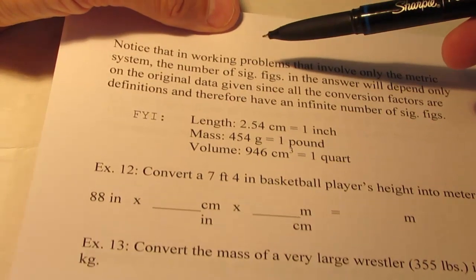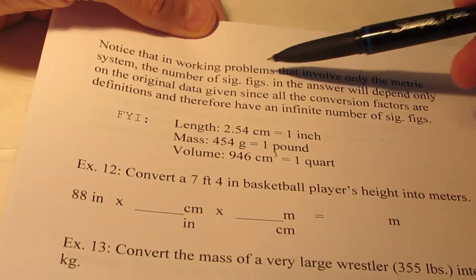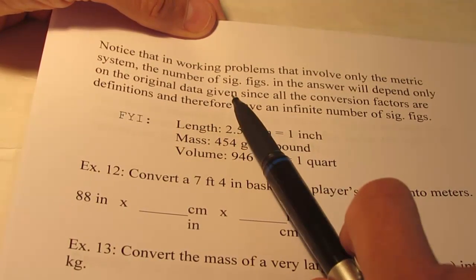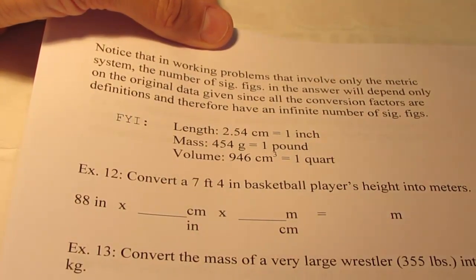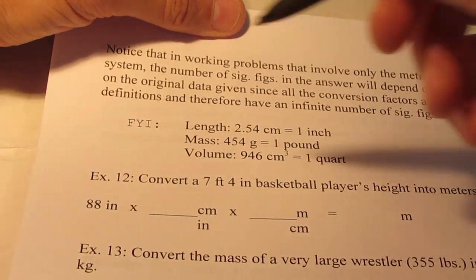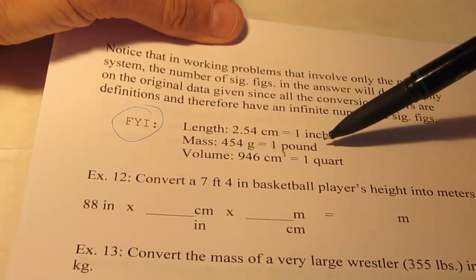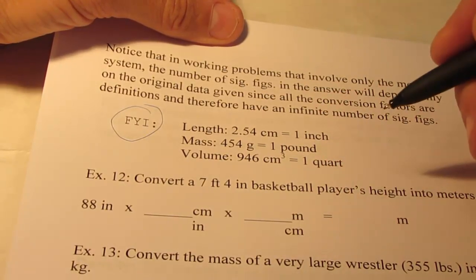Alright, so notice that in working problems that involve only the metric system, the number of sig figs in the answer will depend only on the original data given, since all conversion factors are definitions and therefore have an infinite number of sig figs. Now for your information, when we go from metric to English, of course those conversion factors are not based on powers of ten.